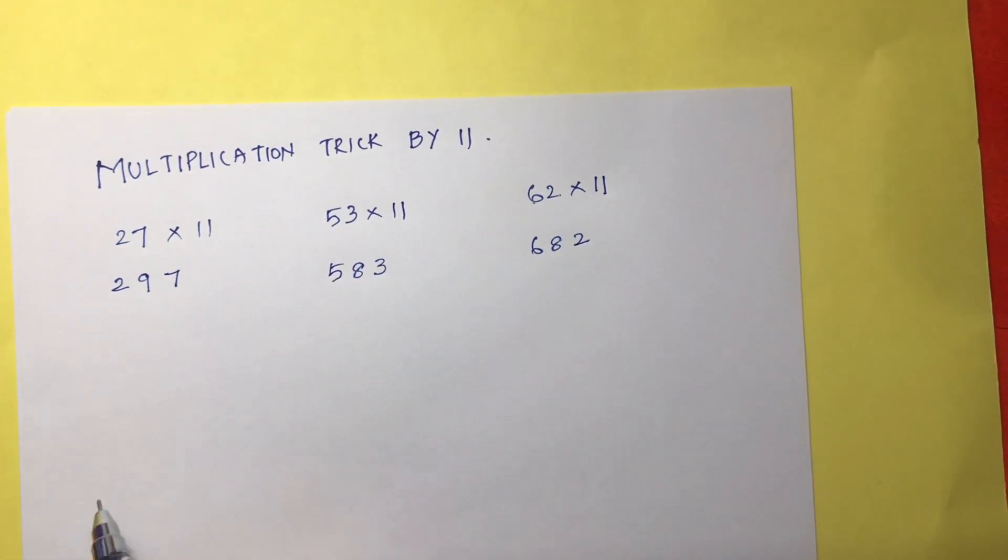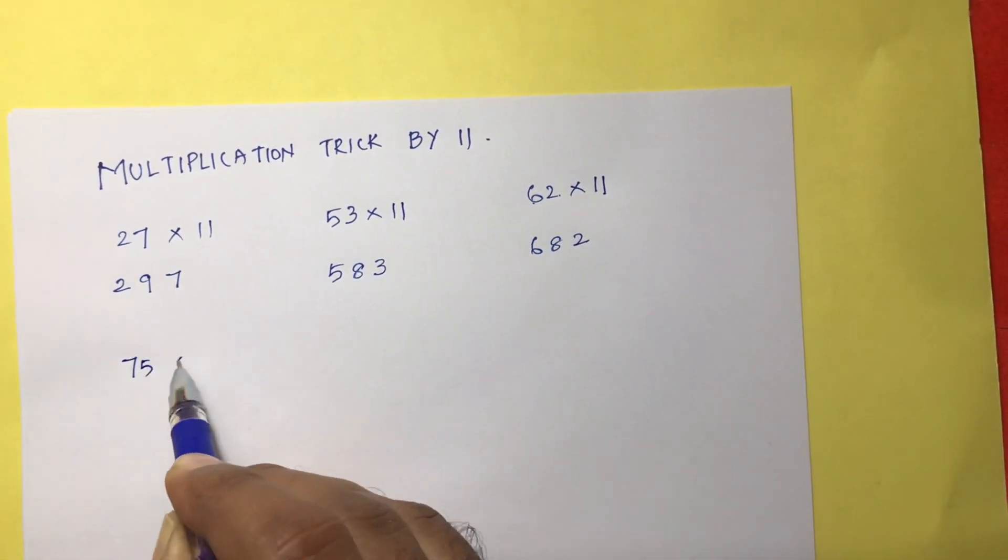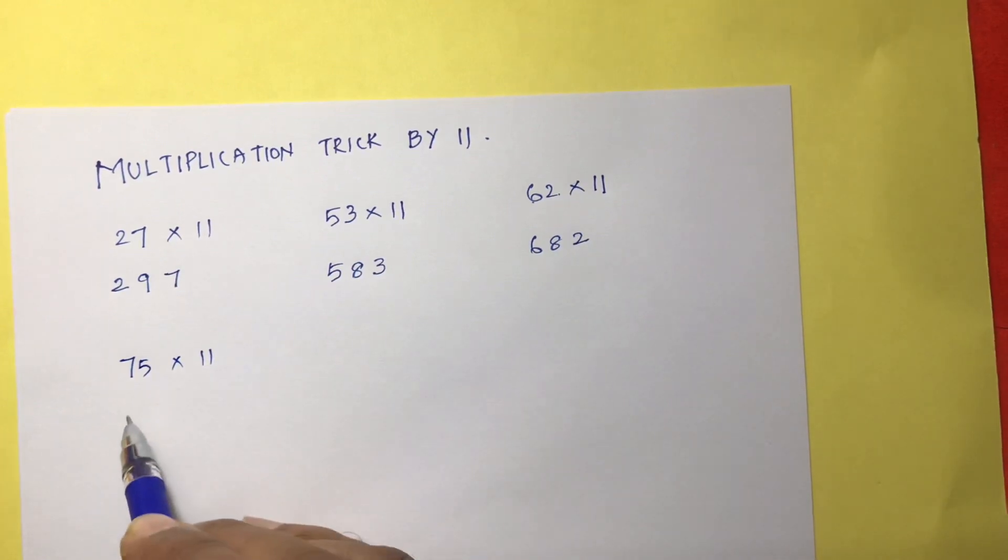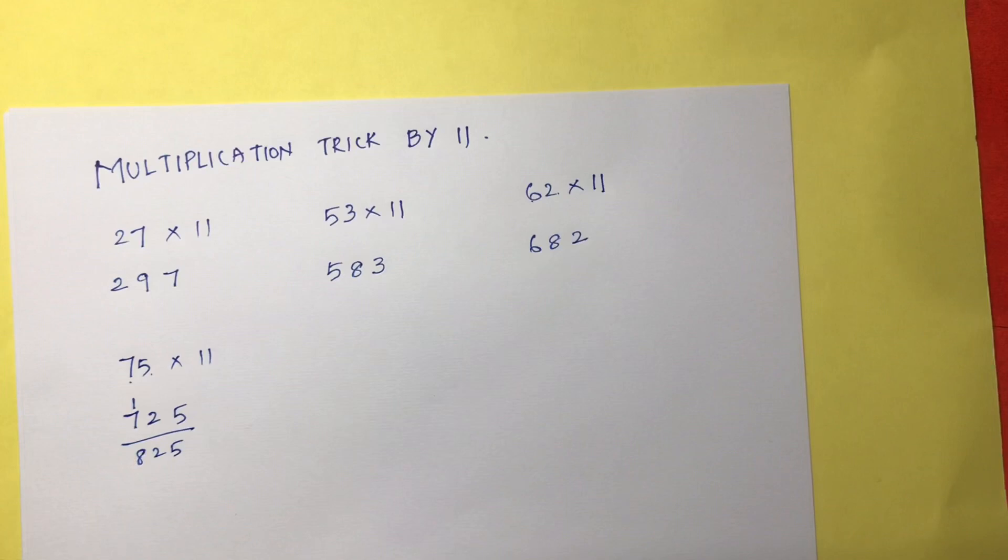In the same way, if you take numbers like 75 into 11, you can write 7, 5. But 7 plus 5 is 12, so 2 here, 1 here. So the answer will be 825.